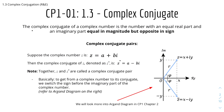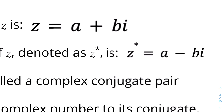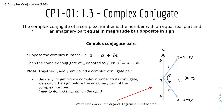The Complex Conjugate of a complex number is the number with an equal real part, and an imaginary part with equal magnitude but opposite in sign. So if the complex number is z = a + bi, then the complex conjugate, denoted as z*, is equal to a - bi.